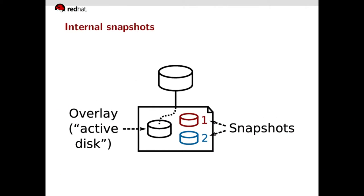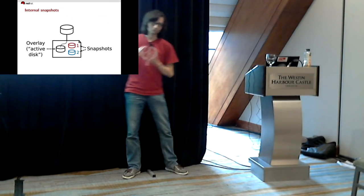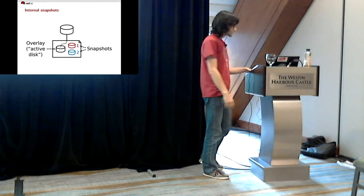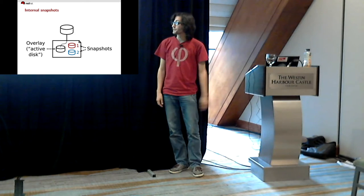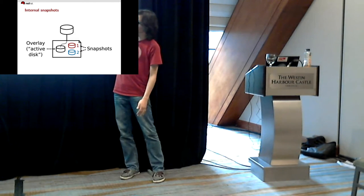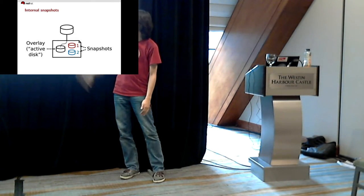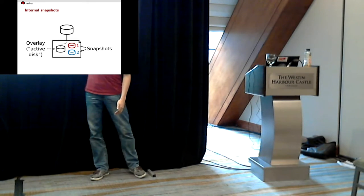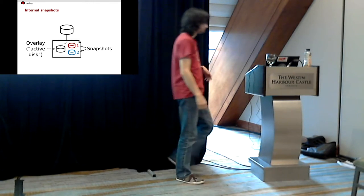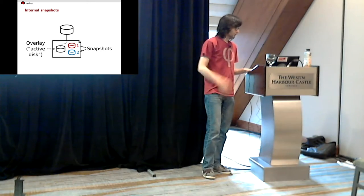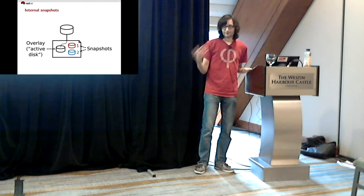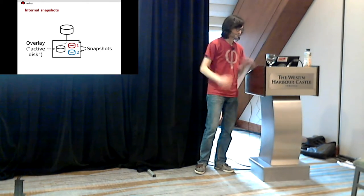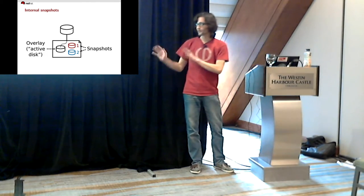These are called external snapshots because the snapshot and the overlay are two different files. Certain image formats supported by QEMU, mostly QCOW2, also support internal snapshots where all overlays and snapshots are stored within a single file. In that case, snapshots are identified through a name instead of a filename. Whether you should use internal or external snapshots is mostly a matter of taste — I don't think there's a real reason to prefer one over the other.